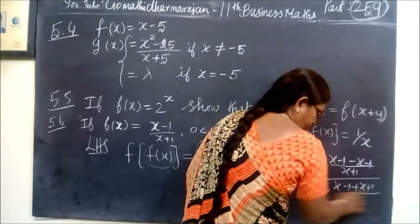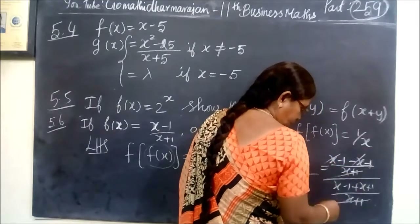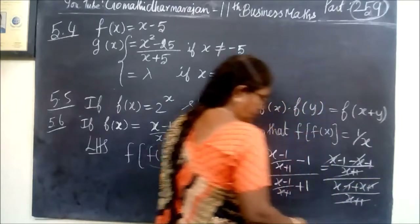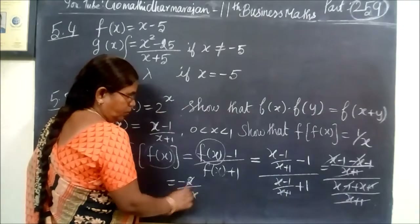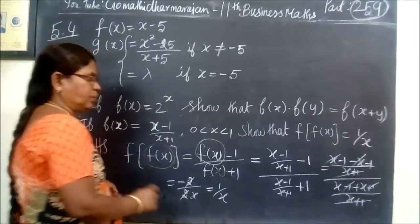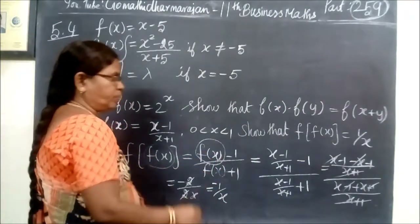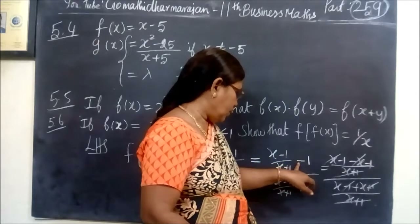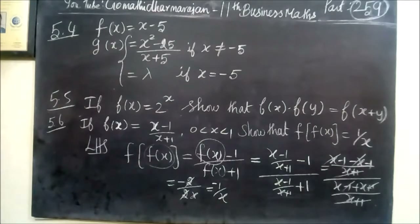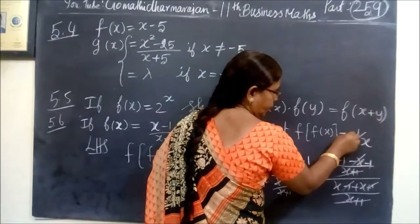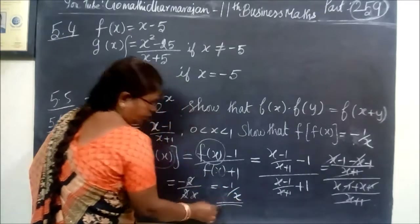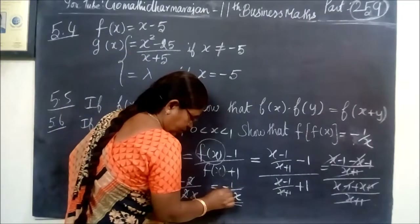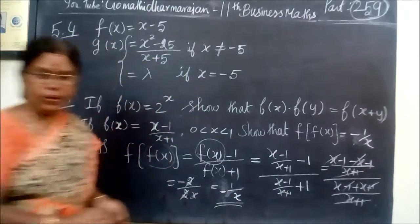So x minus 1 by x minus 1 cancels, giving us minus 2 by 2, which simplifies. The answer is 1 by x. So the answer for exercise 5.4 is confirmed as f(f(x)) equals 1 by x.